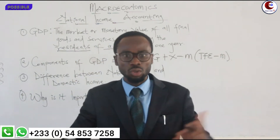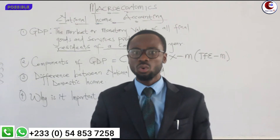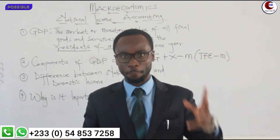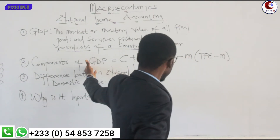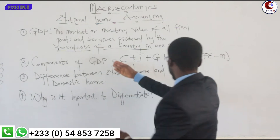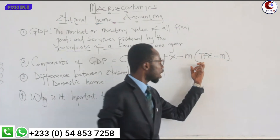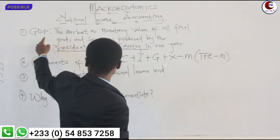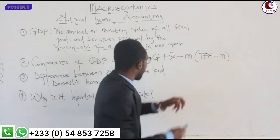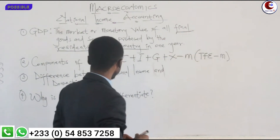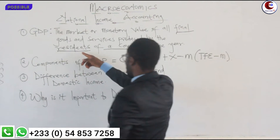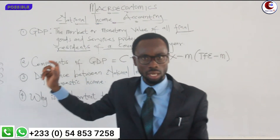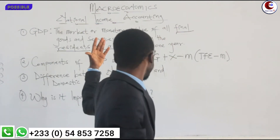The word 'final' is also very important. Final means we are not looking at intermediary goods, we are not looking at second-hand goods, and we are not looking at work in progress. We are looking at final goods only. That is why we said the formula for GDP can also be written as total final expenditure minus imports. So from the definition: the market value or monetary value of all final goods and services produced by the residents of a country in one year — that is GDP.